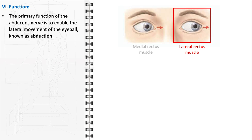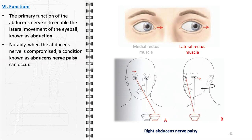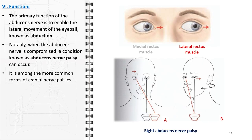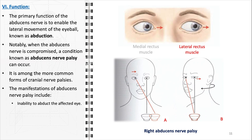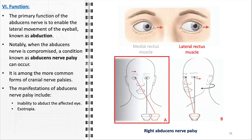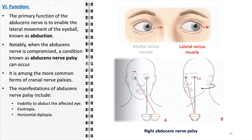However, the functionality of the abducens nerve is crucial not just for its normal operation but also in the context of its potential compromise, leading to a condition known as abducens nerve palsy. This condition ranks among the more commonly encountered cranial nerve palsies and presents with distinct clinical manifestations. One of the primary symptoms is the inability to abduct the affected eye, as the lateral rectus muscle fails to contract properly, hindering the eye's outward movement. Another manifestation is esotropia, where the affected eye turns inward due to unopposed action by the medial rectus muscle. This misalignment disrupts binocular vision and often leads to horizontal diplopia, or double vision.